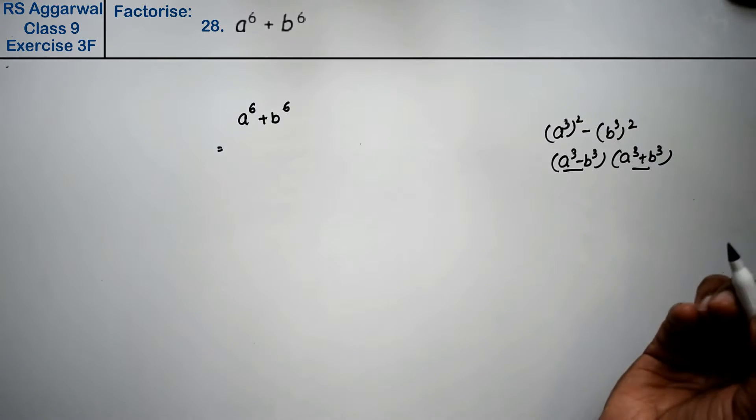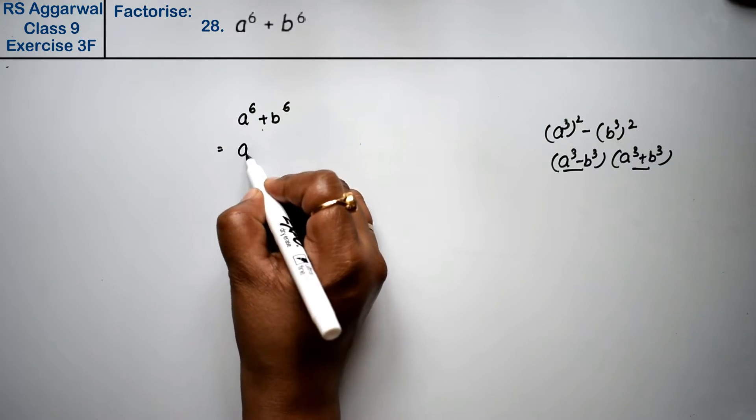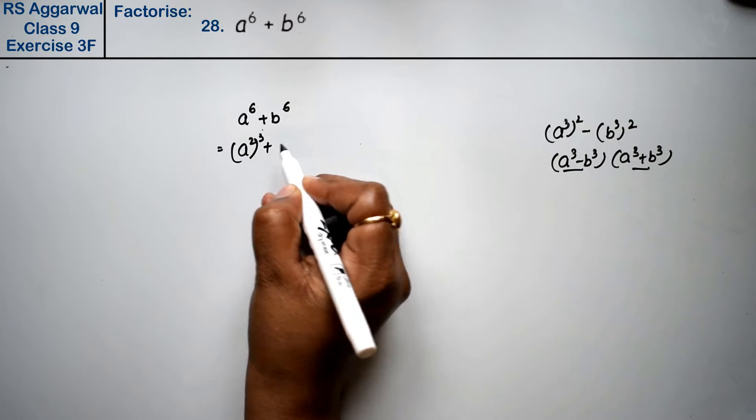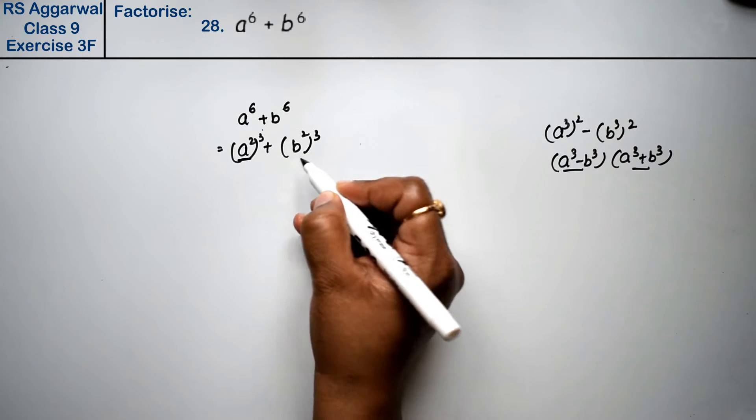Now it becomes a different formula. But you have a plus here, so what do we write it? a square of whole cube plus b square of whole cube. Now, this whole a and this whole b.